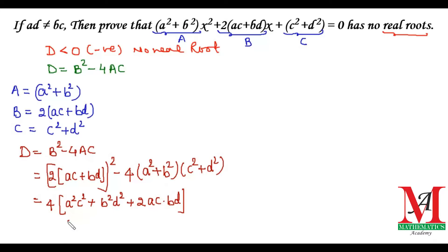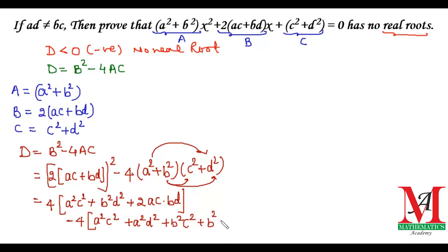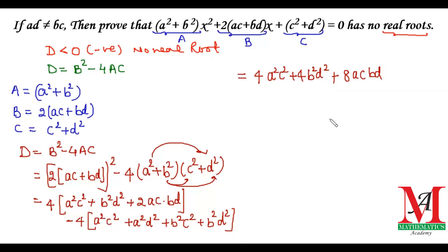Now multiplying out the remaining terms: minus 4 times a squared c squared, plus a squared d squared, plus b squared c squared, plus b squared d squared. After simplification, we get 4a²c² + 4b²d² + 8abcd, and then minus 4a²c², minus 4a²d², minus 4b²c², minus 4b²d².